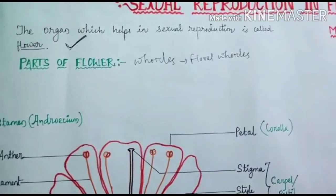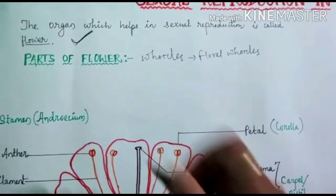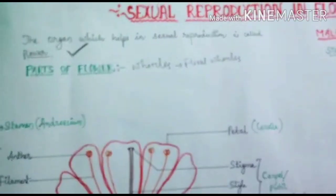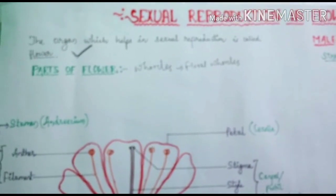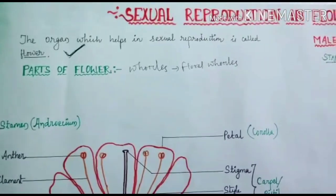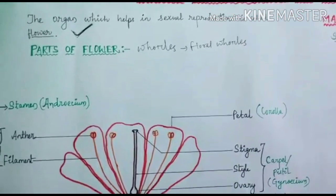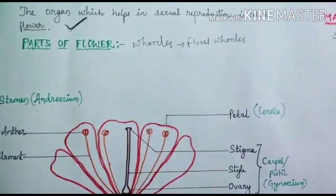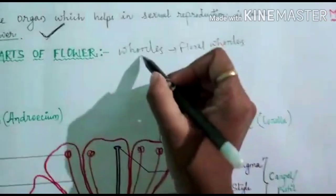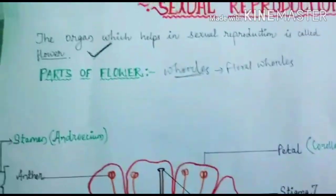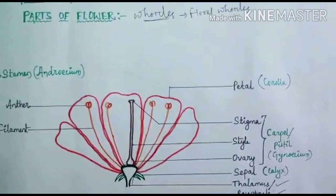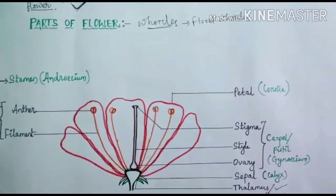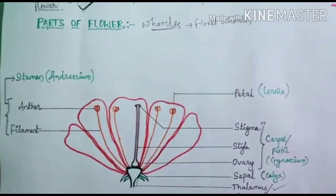Before going to sexual reproduction, we need to know the parts of the flower. The organ which helps in sexual reproduction is called the flower. Each part of the flower is called a whorl, so they are called the floral whorls. Let's see how these floral whorls are arranged in a flower.